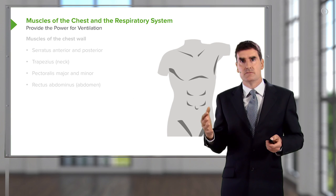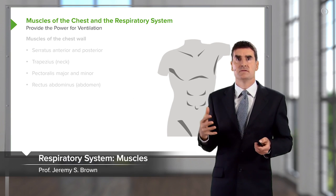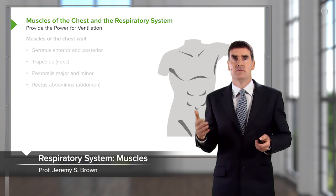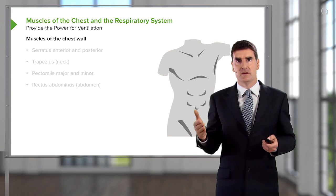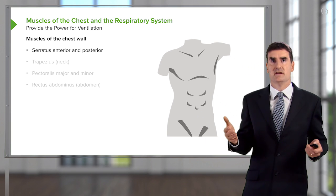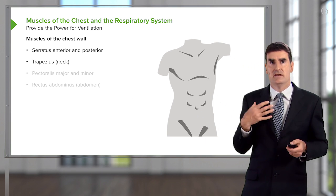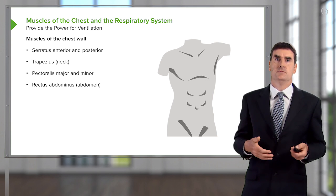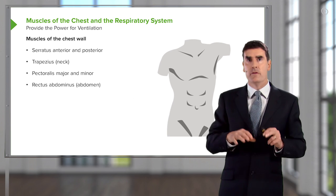To move the chest during respiration requires muscles, and there are three sets of muscles involved. There are the muscles of the chest wall: these are the serratus anterior and posterior, the trapezius of the neck, the pectoralis major and minor, rectus abdominis, and the abdominal muscles.